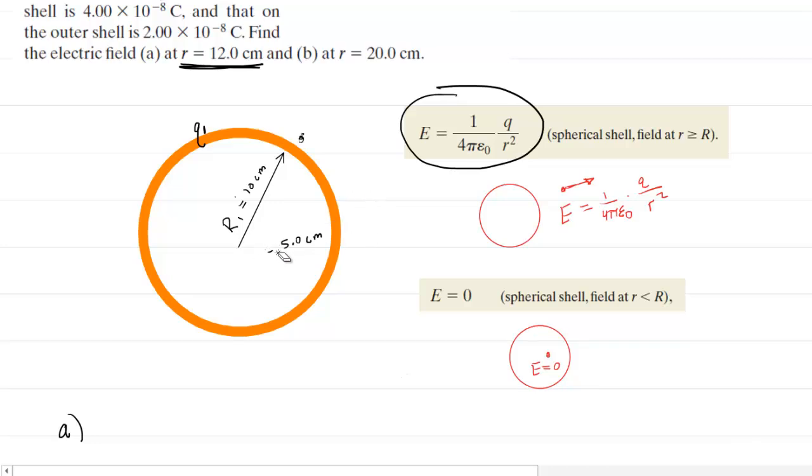It just doesn't matter for part A because that second shell has a radius that is larger than the location at which we're calculating the field, so that field would be zero from that larger shell. All we need to do in part A is calculate the electric field based on the smaller radius shell, the inner shell.